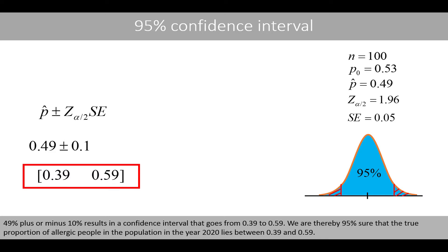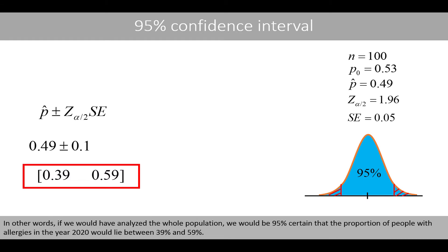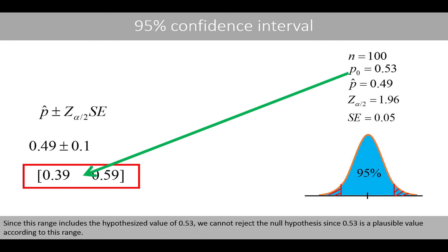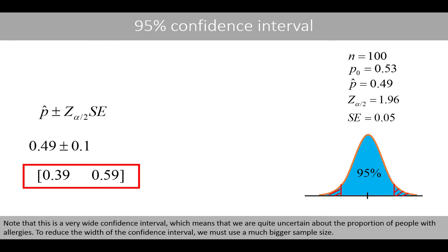49% plus or minus 10% results in a confidence interval from 0.39 to 0.59. We are thereby 95% sure that the true proportion of allergic people in the population in 2020 lies between 39% and 59%. Since this range includes the hypothesized value of 0.53, we cannot reject the null hypothesis, as 0.53 is a possible value within this range. Note that this is a very wide confidence interval, meaning we are quite uncertain about the proportion. To reduce its width, we must use a much bigger sample size.